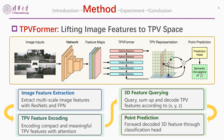We further design a TPVFormer model to effectively generate TPV planes from input RGB images. First, we process the input images with 2D backbones such as ResNet and FPN to extract multi-scale image features. Second, we leverage the attention mechanism to encode compact and meaningful TPV features from image features. Then, we map a query location XYZ to the TPV space and generate its features. Lastly, a classification head is applied to the informative 3D features.